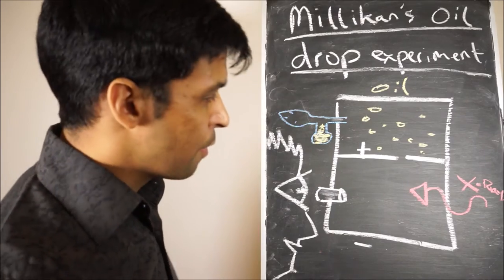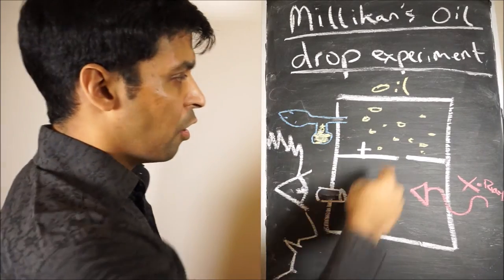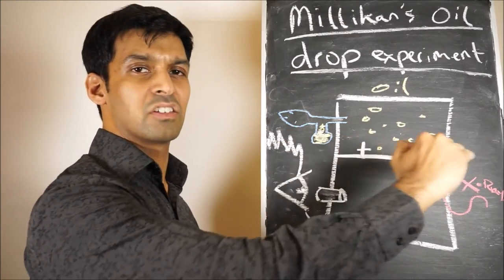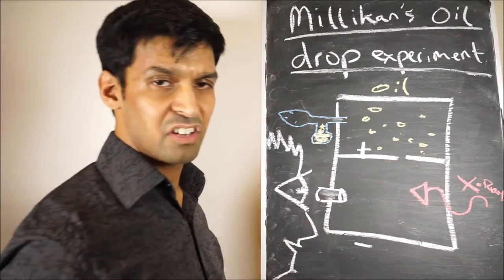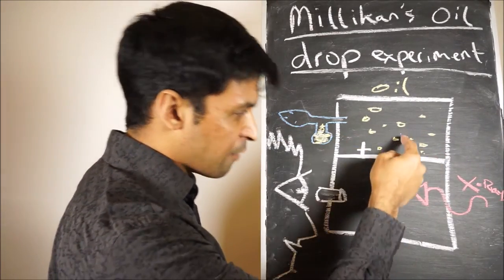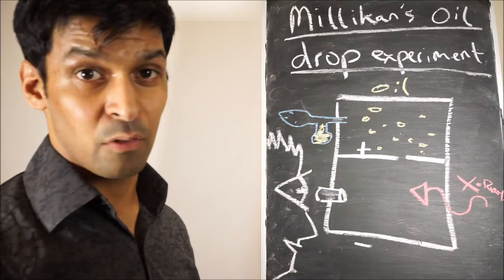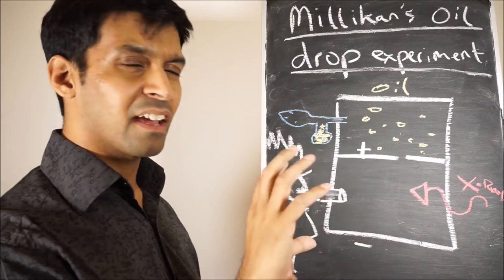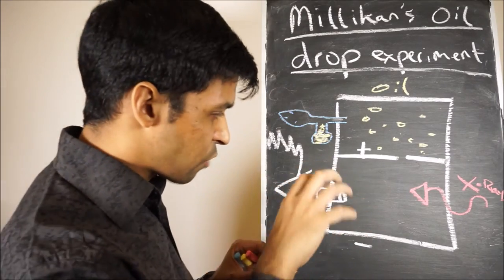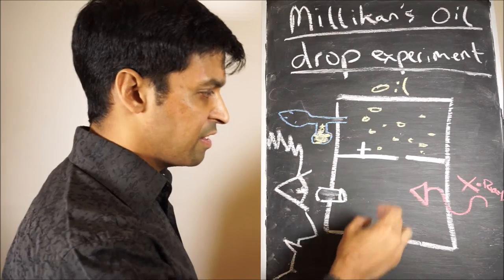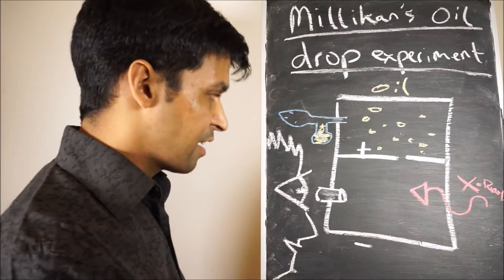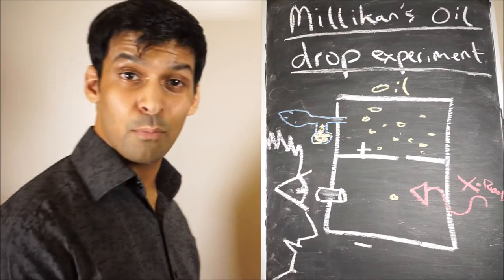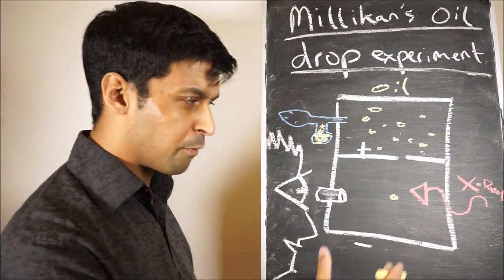If you turn it all the way up, maximum power, the oil drops fall and then get attracted and stick to the positively charged plates. If it's not strong enough, it'll continue to fall down to the bottom. But at a particular strength of electric current, what you can do is you can float an oil drop in the middle. So it's kind of floating.